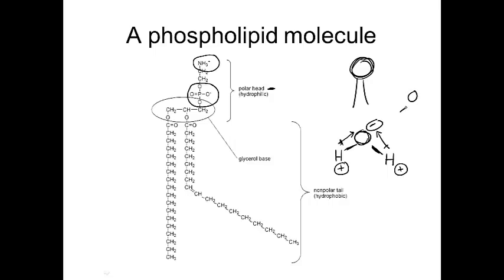If there was another water molecule nearby, the positive pulls are going to interact with the negative pulls of the neighboring molecule — they're going to be attracted to one another. This is called a hydrogen bond. It's a good thing that water is polar, because if water wasn't polar, we wouldn't get these hydrogen bonds, the molecules wouldn't be as attracted to one another, and water wouldn't be a liquid at room temperature.